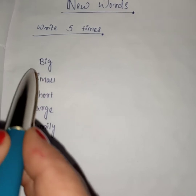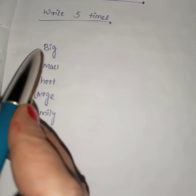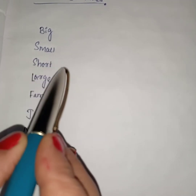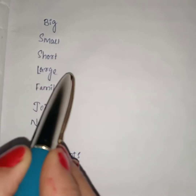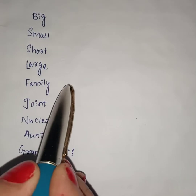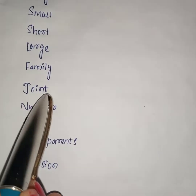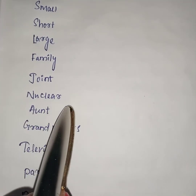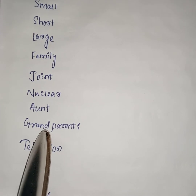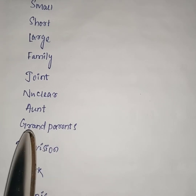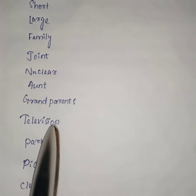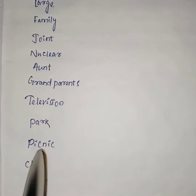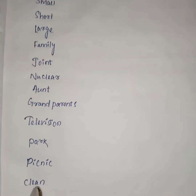देखो, मैं तुम लोगों को new words पढ़ देती हूँ। B-I-G, Big. S-M-A-L-L, Small. S-H-O-R-T, Short. L-A-R-G-E, Large. F-A-M-I-L-Y, Family. J-O-I-N-T, Joint. N-U-C-L-E-A-R, Nuclear. A-U-N-T, Aunt. G-R-A-N-D-P-A-R-E-N-T-S, Grandparents. P-A-R-E-N-T-S, Parents. P-A-R-K, Park. P-I-C-N-I-C, Picnic. C-L-E-A-N, Clean.